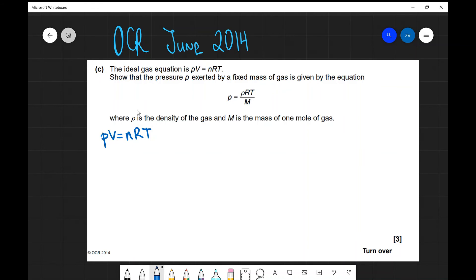I'm going to write here on the side that density rho is equal to mass over volume. So that's your standard mass in kilograms of the gas divided by the volume.